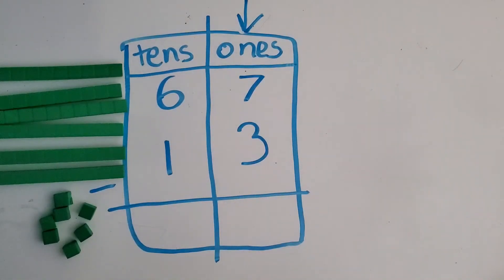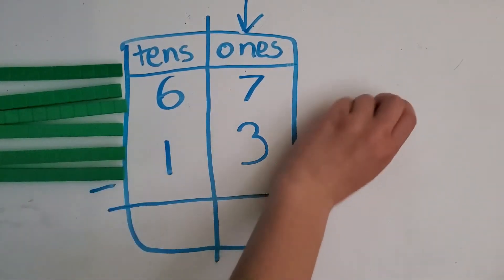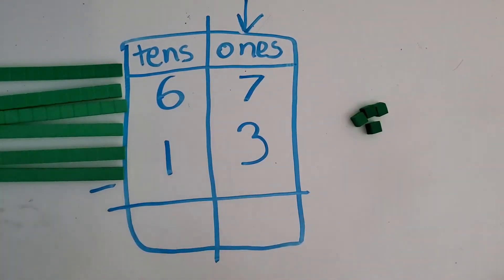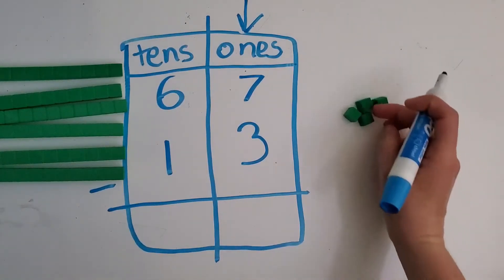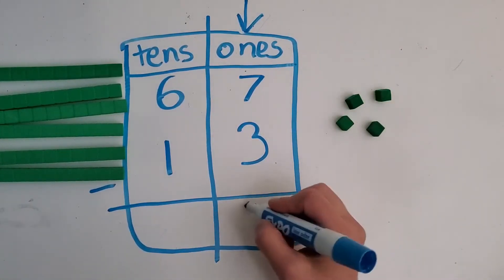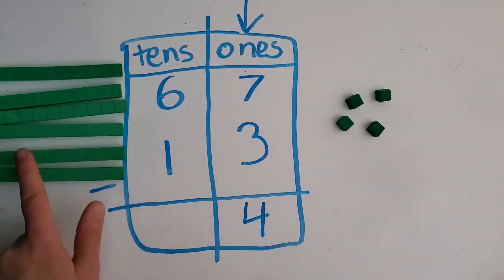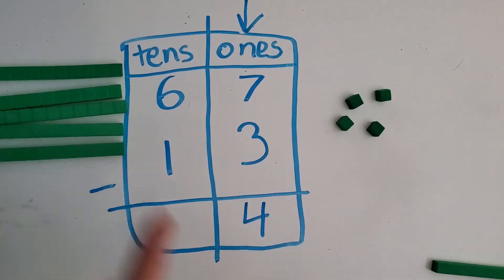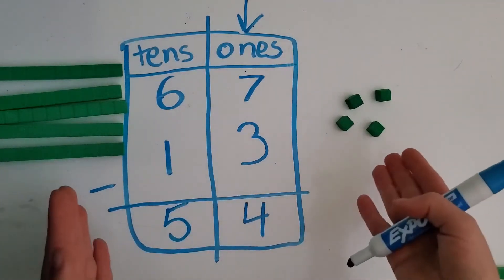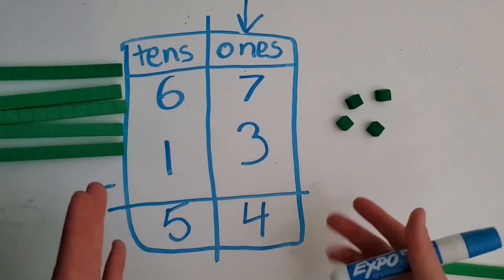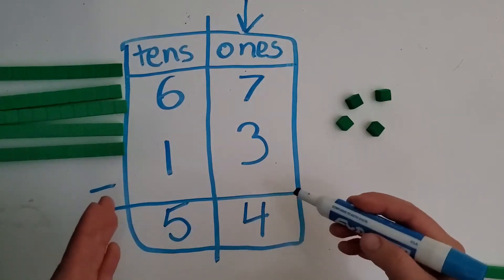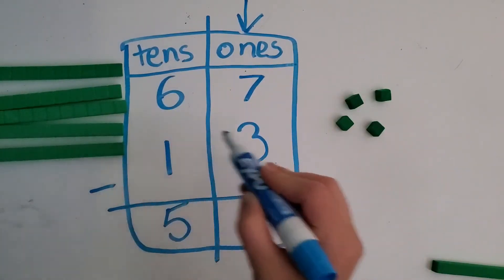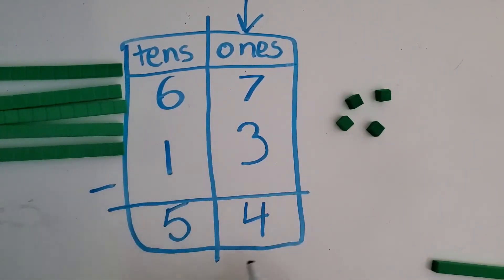So seven minus three — I'm going to take these seven ones and take away three of them. Took away three. How many do we have left? One, two, three, four — four. So four goes here in the ones. Then we have our six tens — let's take away one — and now we have one, two, three, four, five. So we have 54: five tens, four ones, which equals 54. So 67 was our whole; we took away 13, which is part of it, and we got the other part, which is 54.